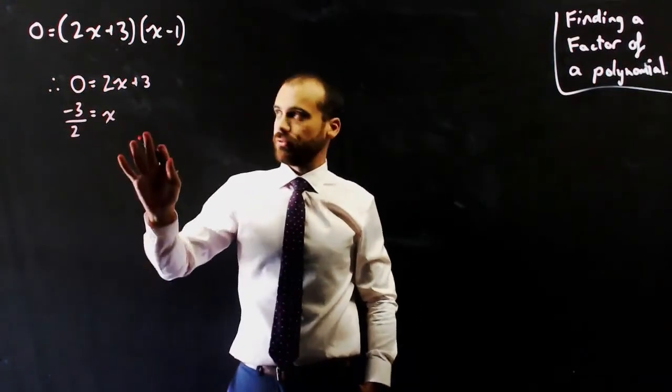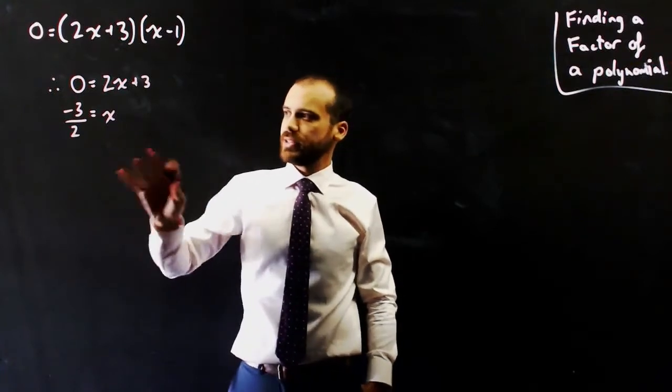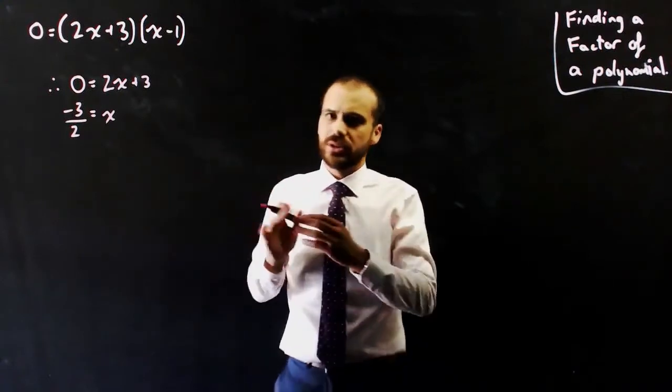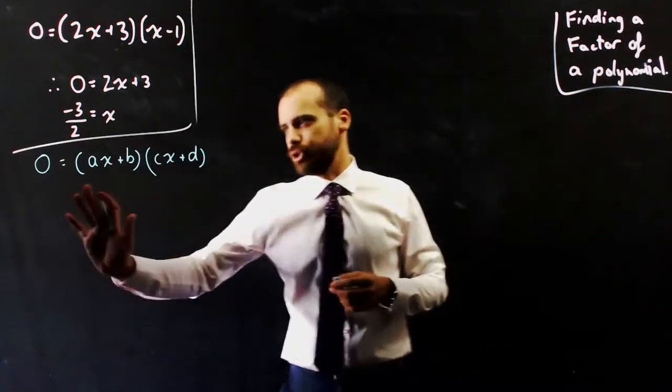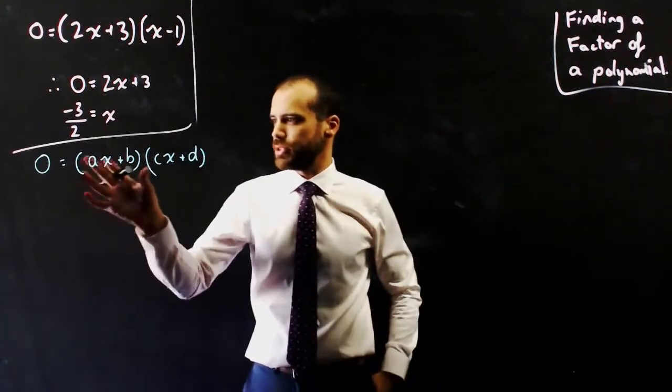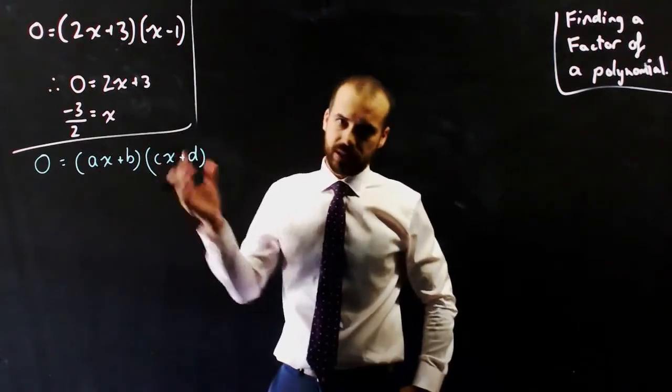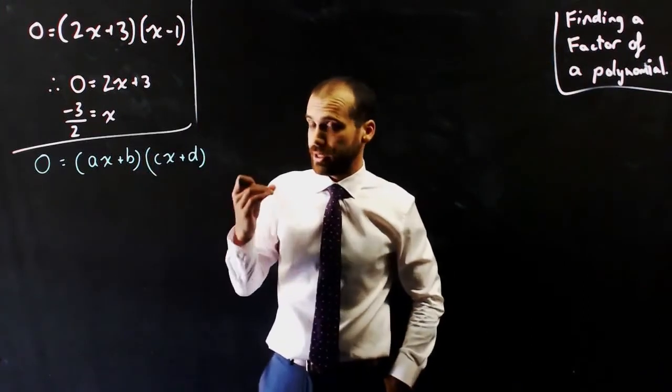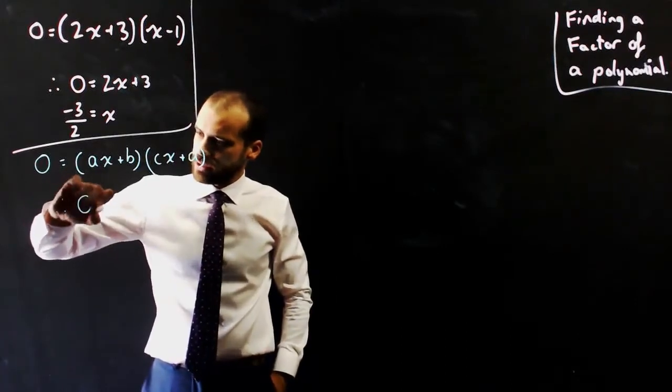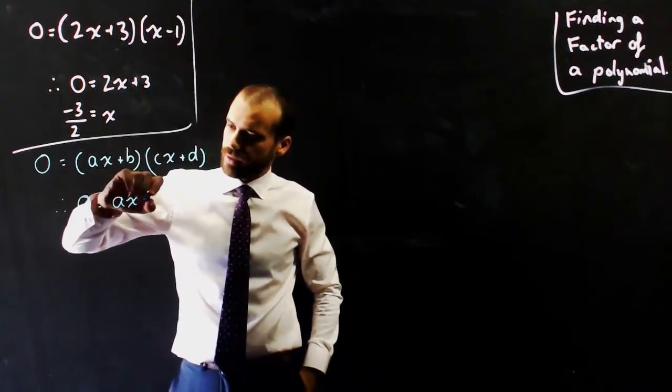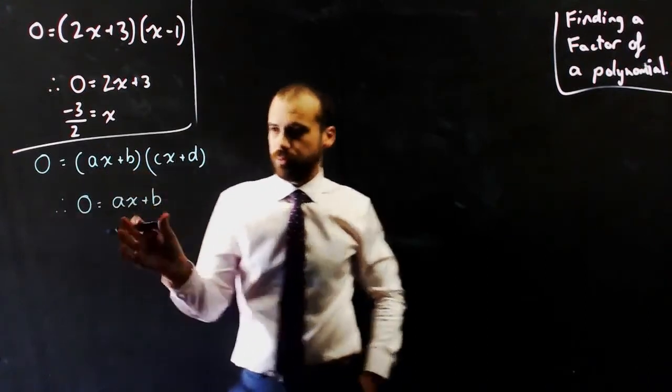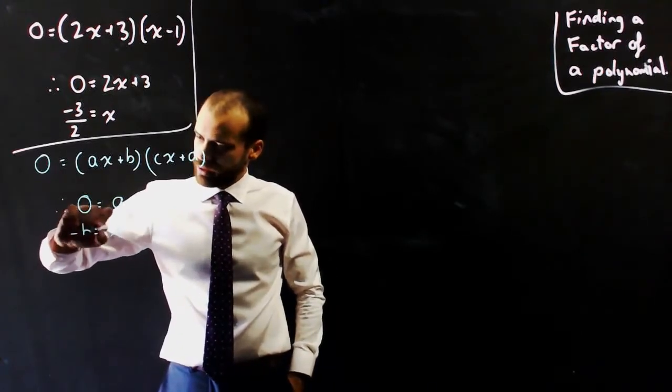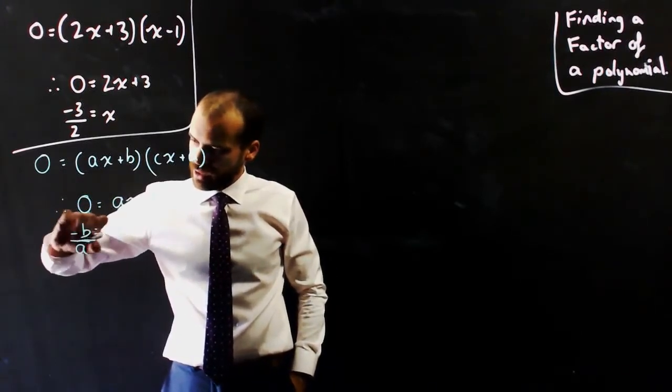Now, that result for those particular numbers is interesting, but let's say I just get rid of the numbers entirely and just use a bunch of letters. So now we're using something more general. We're saying that 0 is equal to something, ax plus b, times something else, cx plus d. Now, if I use my null factor law again, I can say that therefore 0 is equal to ax plus b, and I can rearrange that to make x the subject, it's going to be negative b on a.